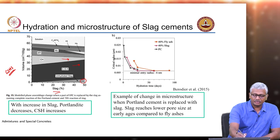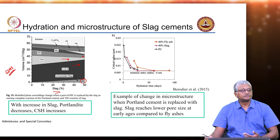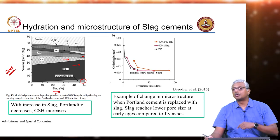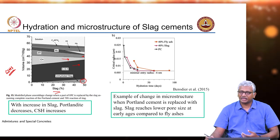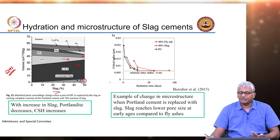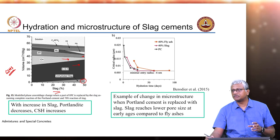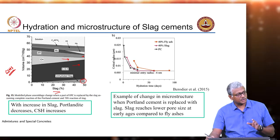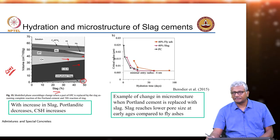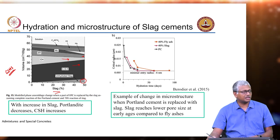Generally, ettringite will get converted to monosulfate more in a slag concrete — why? Because there is more alumina present, so the alumina-silica balance is going to get affected when you replace cement by slag. Very often when we prepare blended cements, we ensure that we modify the sulphate content to make it suitable for use with the alumino-silicate mineral admixture. Sulphate optimization is often done whenever mineral admixtures are used to ensure we do not get too much of a change in balance, and sulphate optimization also helps you attain early strengths. Early strengths are partially because of ettringite formation, and that you can obtain by doing some sulphate optimization.